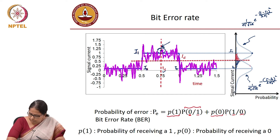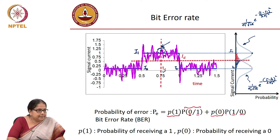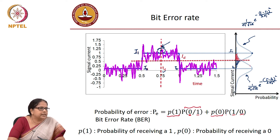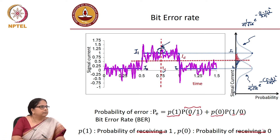P1 is the probability of sending a 1, and P0 is the probability of sending a 0. It is not receiving — it is actually sending, because receiving is where you are making a mistake. So these are probability of 1 and probability of 0 for transmission.